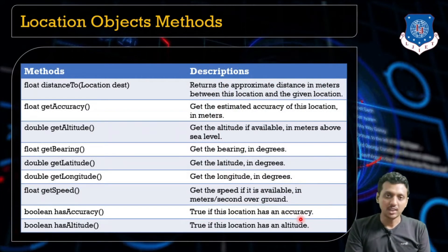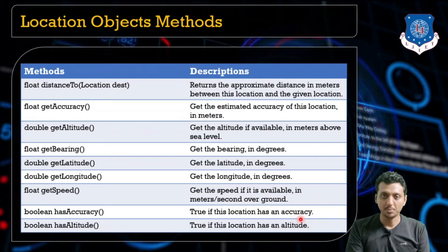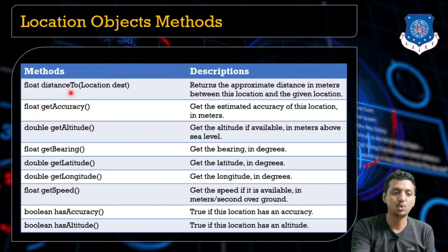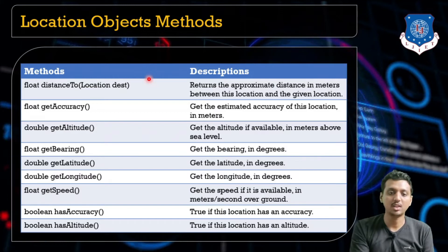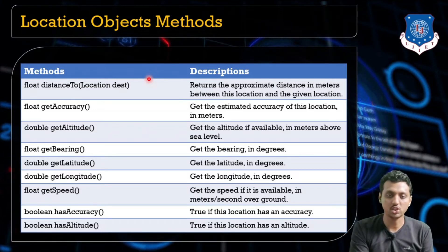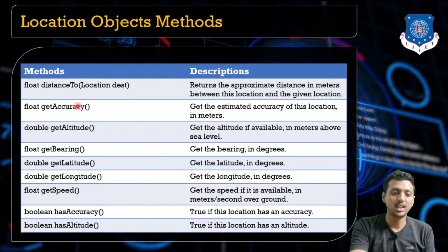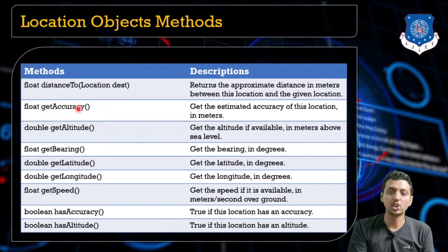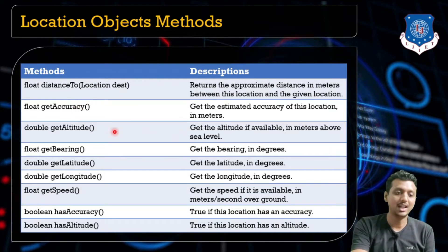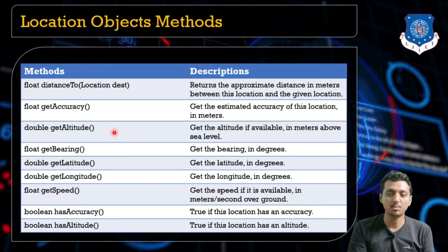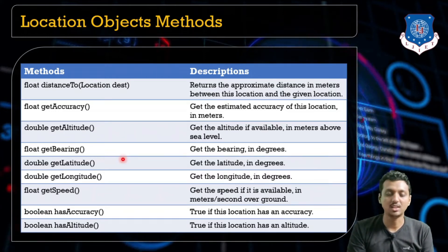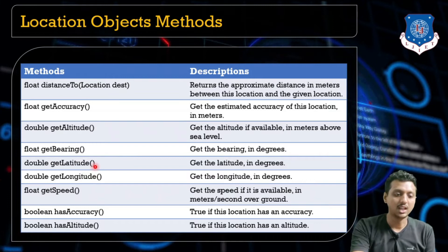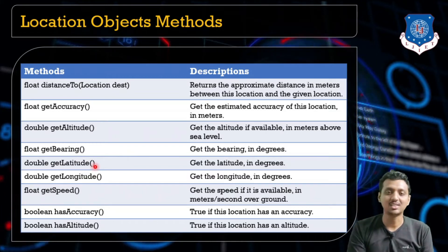These are the various methods accessible through location objects. First, float distanceTo() — it returns the approximate distance in meters between the location and the given location. getAccuracy() returns the estimated accuracy of the location in meters. getAltitude() returns the altitude in meters above sea level. getBearing() gives the bearing in degrees. getLatitude() and getLongitude() return latitude and longitude in degrees respectively.